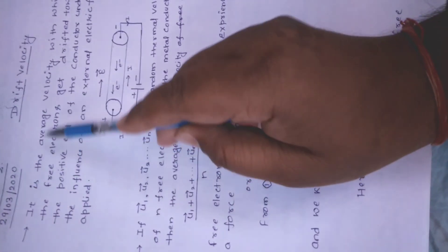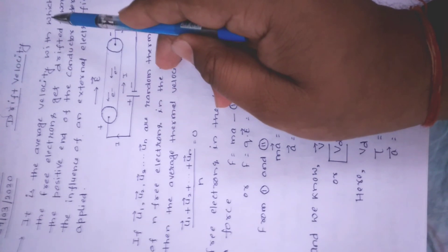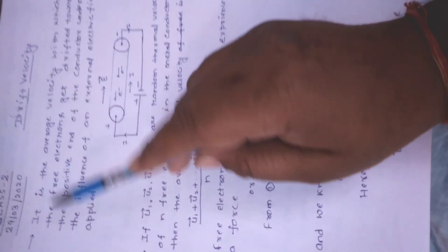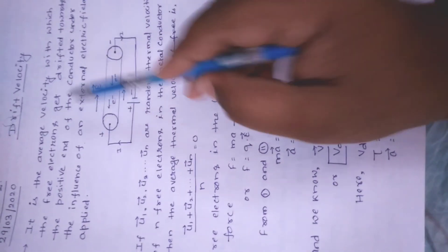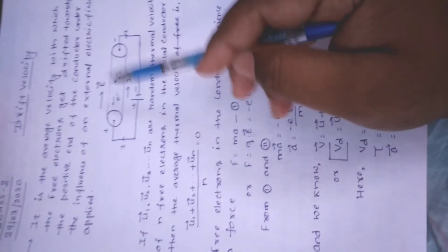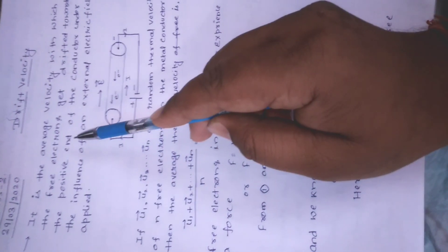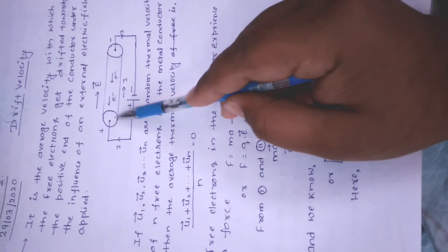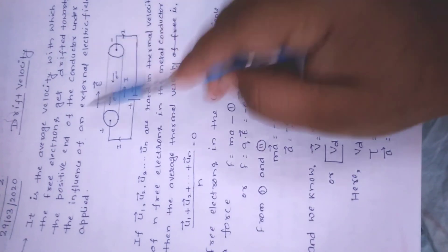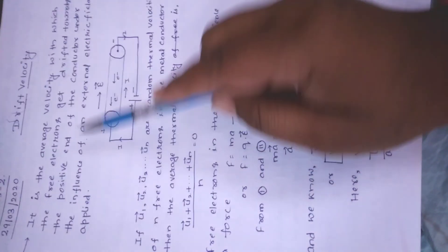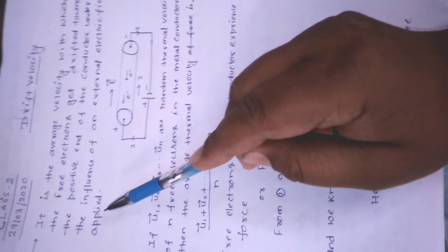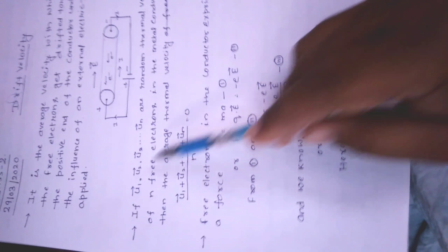फिर से definition: Drift velocity वह average velocity है जिससे free electrons metal conductor में drift होते हैं — positive end की तरफ — external electric field के प्रभाव में।